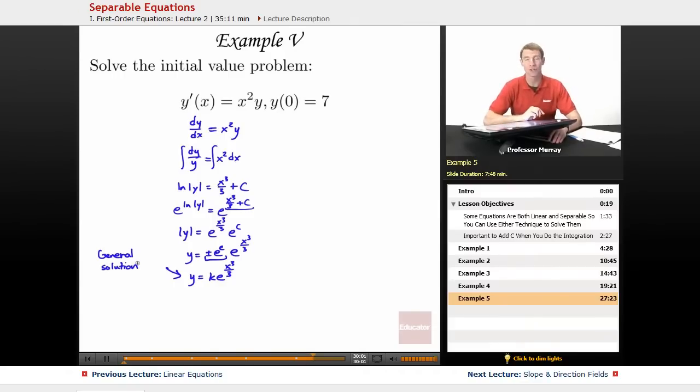However, I've also got the initial condition. I've been given that, and so I'm going to use that to go a little bit farther and figure out the particular value of that constant. So if we hadn't been given that initial condition, we would just stop right now with the general solution. But since we have that initial condition, y of 0 is equal to 7.